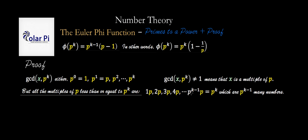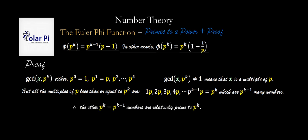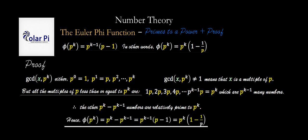There are p to the k minus 1 integers less than or equal to p to the k that have a gcd with p to the k not equal to 1. Therefore, the others — which is p to the k minus p to the k minus 1 numbers — must have a greatest common divisor with p to the k equal to 1, meaning they are relatively prime to p to the k. By definition, counting how many numbers are relatively prime and less than or equal to p to the k gives us phi of p to the k, and we just finished counting: that's exactly what phi of p to the k equals.